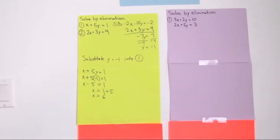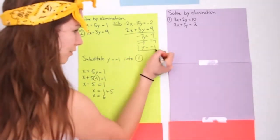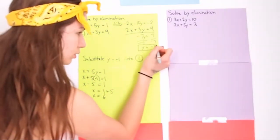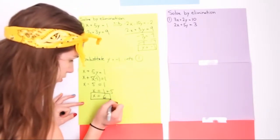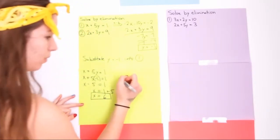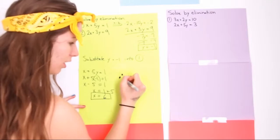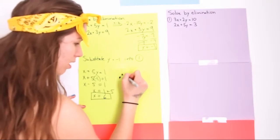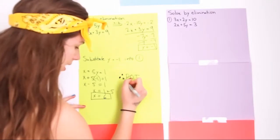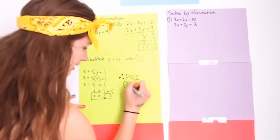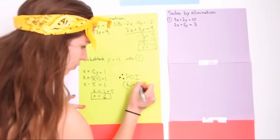Now that you have both your y and x variables, make a therefore statement. Therefore, the point of intersection (POI) is (6, negative 1).